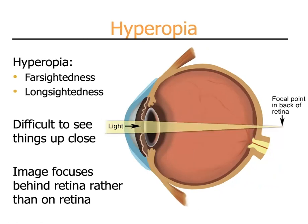Hyperopia, also termed farsightedness or long-sightedness, is the opposite problem — it is difficult to see things up close. This is similar to what happens to people as they age and develop presbyopia. In these cases, the cornea and the lens are not strong enough and the image is being focused behind the retina, so the brain is seeing a blurry image rather than a sharply focused one.